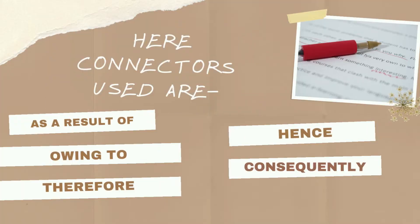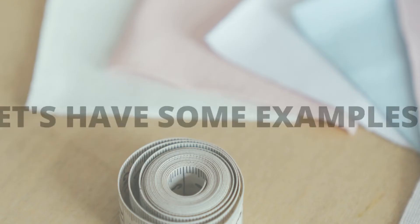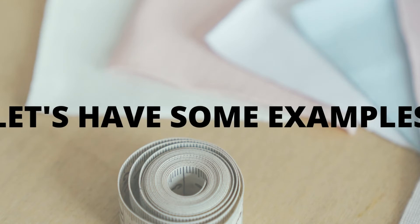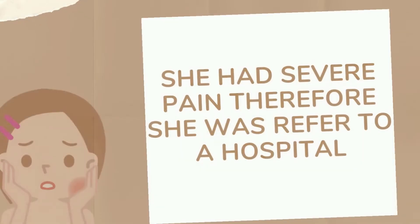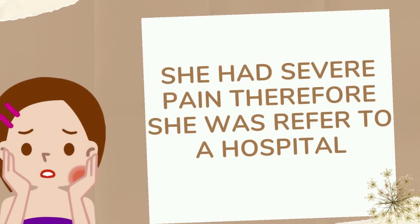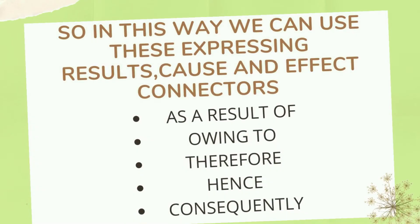The connectors used are: 'as a result of,' 'owing to,' 'therefore,' 'hence,' 'consequently.' Let's have some examples. 'She responded well to the treatment. Consequently, she was discharged from the hospital.' Second example: 'She had severe pain, therefore she was referred to a hospital.' So in this way, we can use these expressing results, cause and effect connectors — as a result of, owing to, therefore, hence, and consequently.